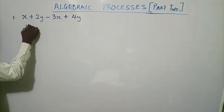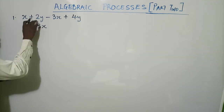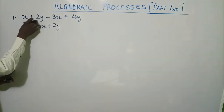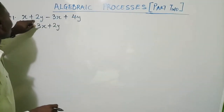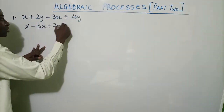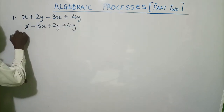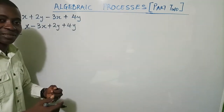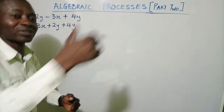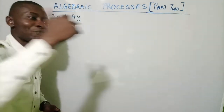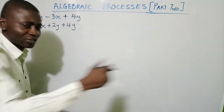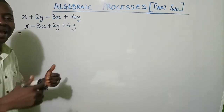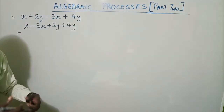We're going to collect the like terms now. We have x, and I bring minus 3x close by, so this gives us x minus 3x. Then we have plus 2y, and you take the plus along — plus 2y — then plus 4y. So this is x minus 3x. In other words, you have x and you owe someone 3x. If you give that person your x, you are still owing them two more.